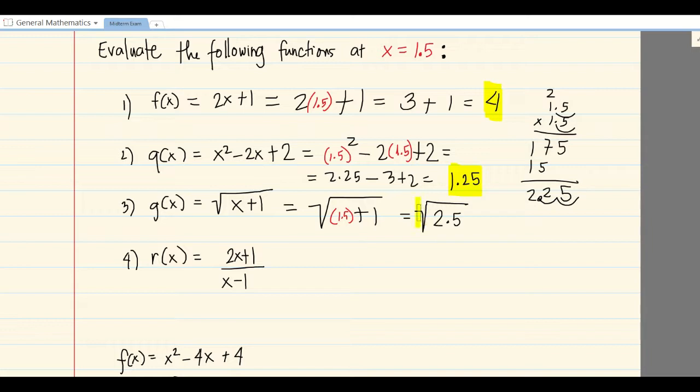Next, copy this: r(x) = (2x+1)/(x-1). Erase x, replace with 1.5. After substitution, 1.5 times 2 is 3 plus 1, over 1.5 minus 1 is 0.5, equals 4 over 0.5.